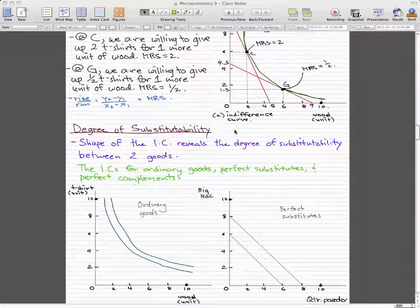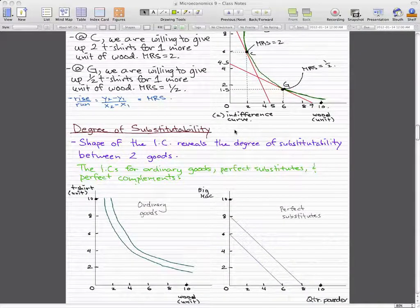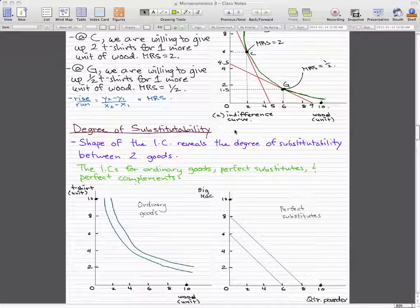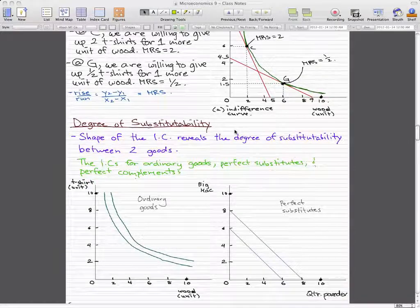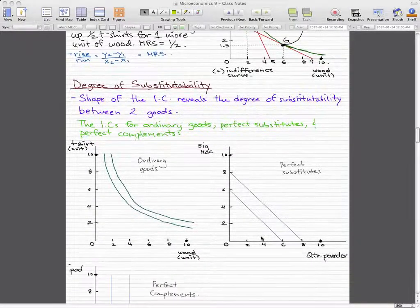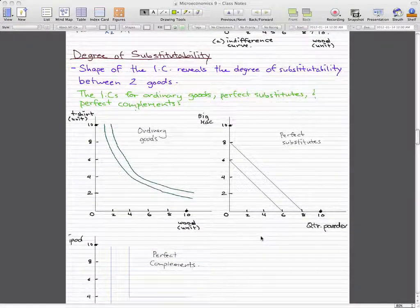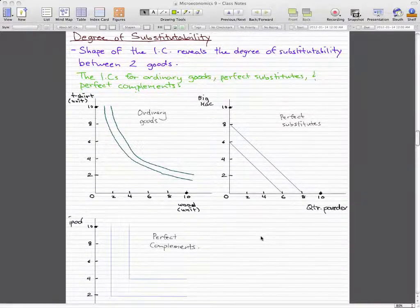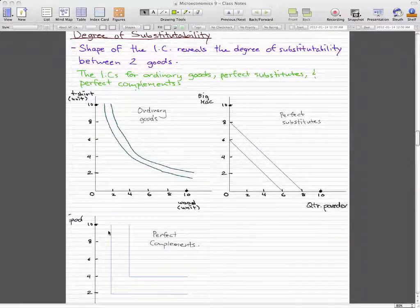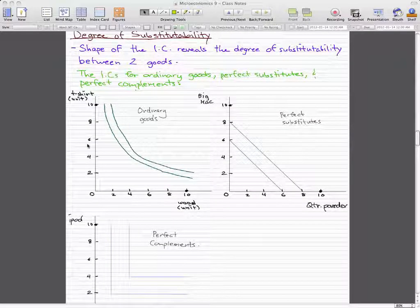Now the degree of substitutability reveals the degree of substitutability between two goods. I'm going to talk about the indifference curves for ordinary goods, perfect substitutes, and perfect complements. What you need to focus on here is the shapes. The shape reveals the degree of substitutability between two goods.